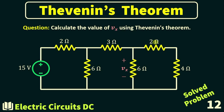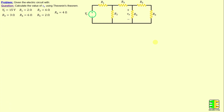Let's begin with problem number 12. We consider a network consisting of six resistors labeled R1 through R6, as well as one independent voltage source. The question is to calculate the value of Vx using Thevenin's Theorem, where Vx is the voltage across resistor R4.